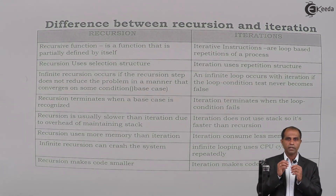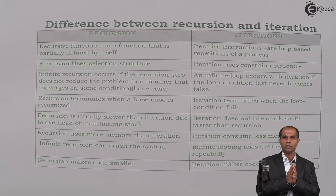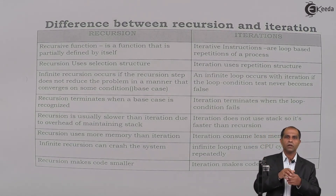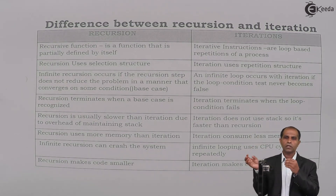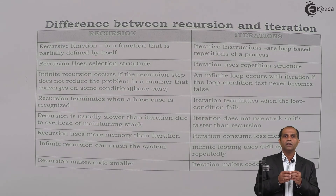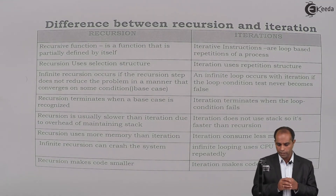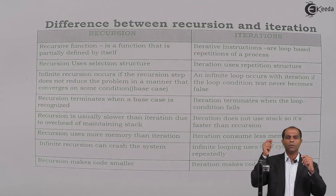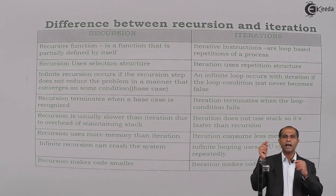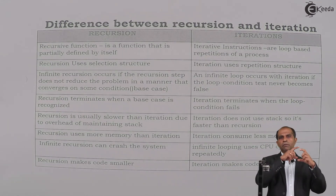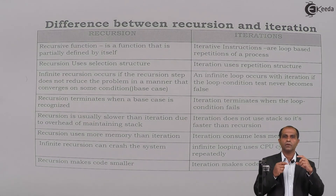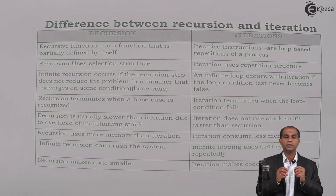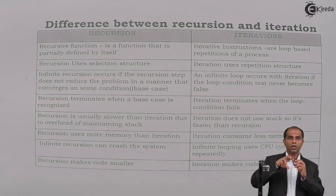Recursion terminates when a base condition occurs, whereas iteration terminates when the loop condition becomes false. When it comes to execution speed, recursions are much slower because they have to create a copy of functions. When a copy is created, a stack of memory is used, causing overhead. Hence recursion is slower than iteration. In terms of memory, recursions use more memory than iterations, since iterations operate on a single variable.